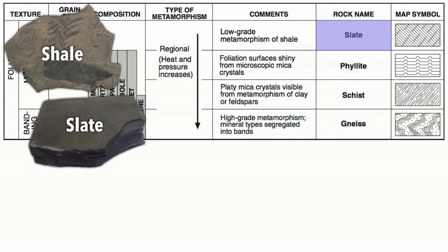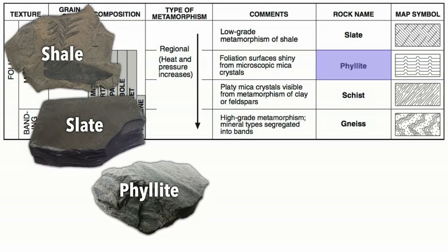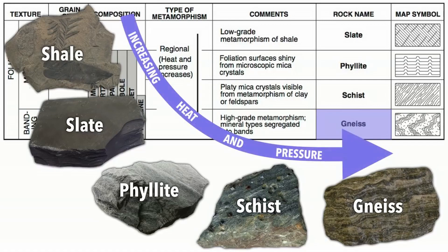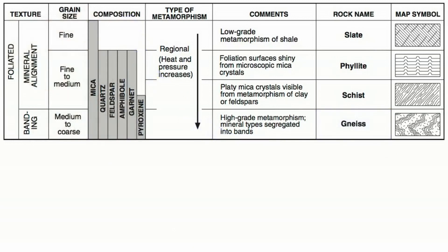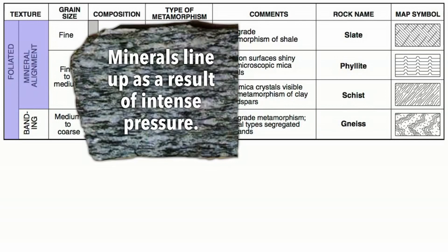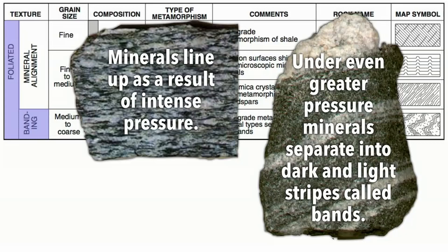Notice shale and slate look very similar. If that slate gets pushed deeper underground, it will metamorphose further into phyllite, then schist with even more heat and pressure, and then gneiss. Notice the bands in gneiss — that's a very common characteristic. If gneiss is pushed even deeper, the heat and pressure will cause it to melt and become an intrusive igneous rock. All of these foliated rocks result from regional metamorphism within the Earth's crust. Pressure causes minerals within the rocks to line up — this is foliation. Mineral alignment is seen in most foliated rocks, while banding — seen only in gneiss — results from really intense pressure.